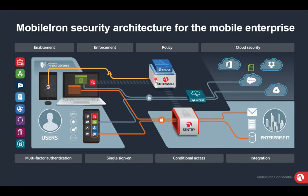The EM console is the heart of the system — it manages users, policies, configuration, compliance, and anything that has to be done with mobile. Sentry is a gateway that allows access to backend resources such as your email server, internal application server, or even an internal database. When a device is registered, MobileIron can push certain applications to it.